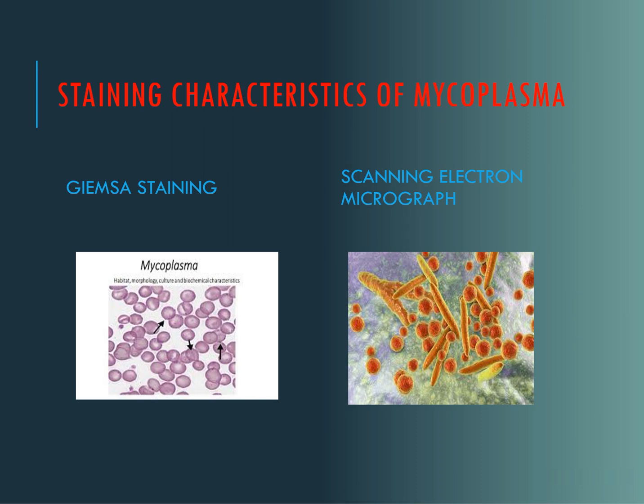The staining characteristics of mycoplasma: they are not stained by the Gram staining method, but they are stained by the Giemsa staining method, and we can also observe them by scanning electron micrography. This figure shows variable forms like coccoid forms, ovoid forms, and filamentous long forms.